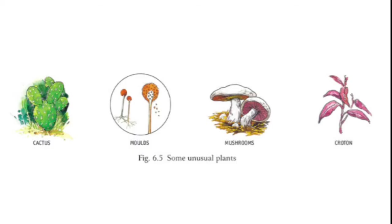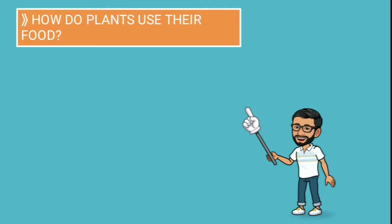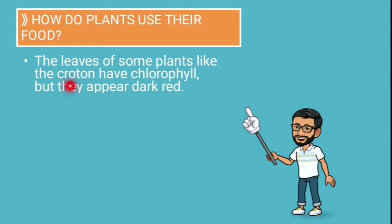These are some unusual plants: cactus, which do not have leaves; molds and mushrooms, which are non-green plants or fungi; and crotons. Crotons have red leaves. They do have chlorophyll, but it is not visible.